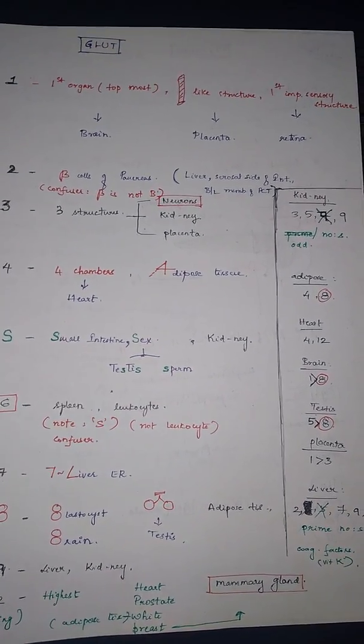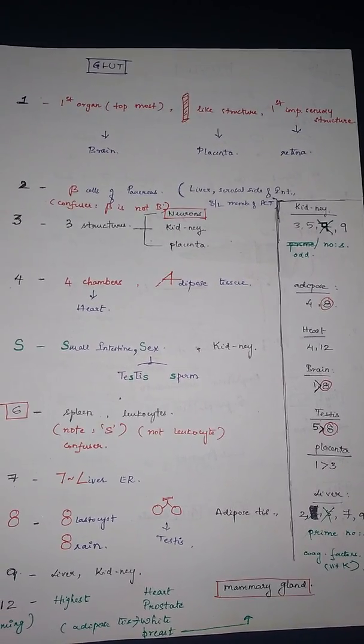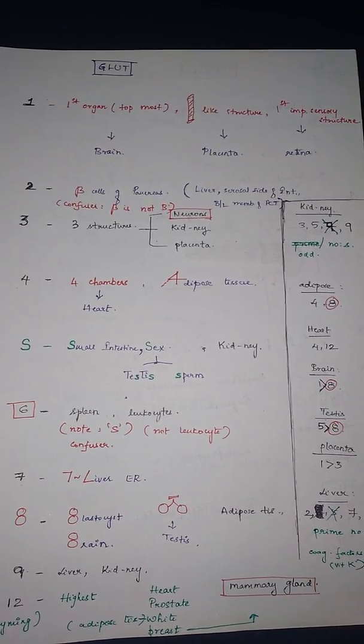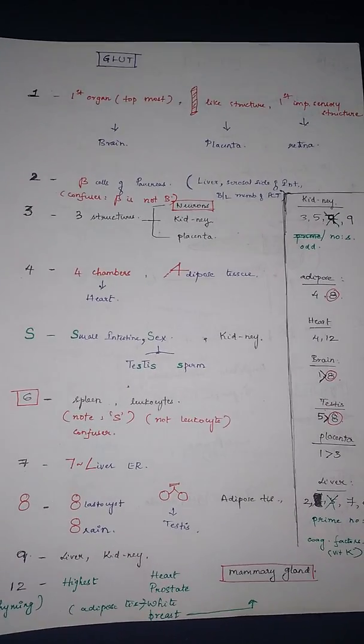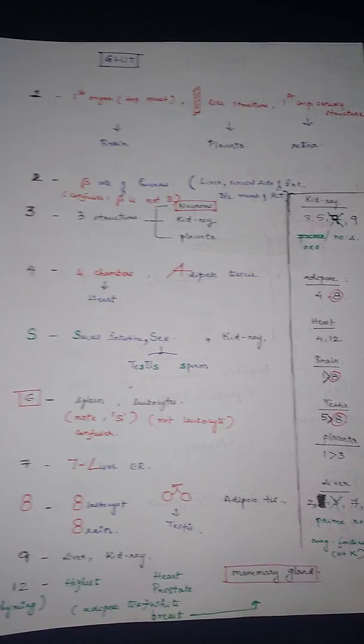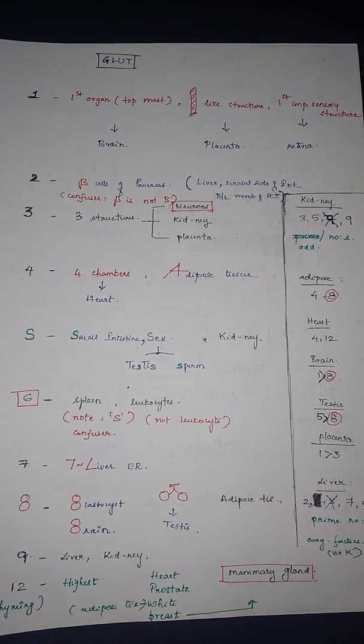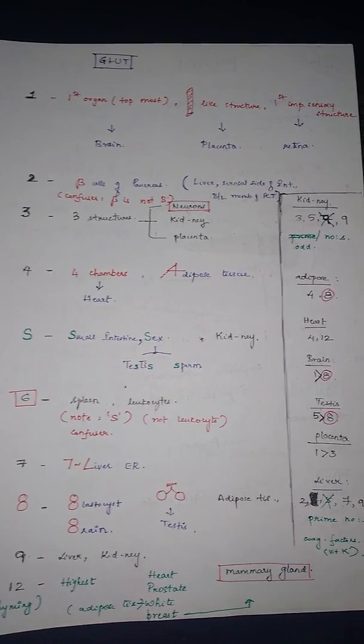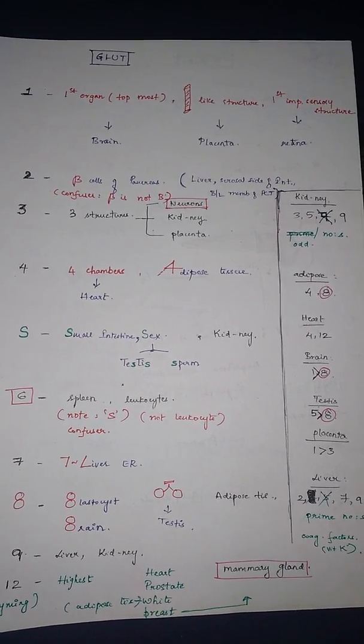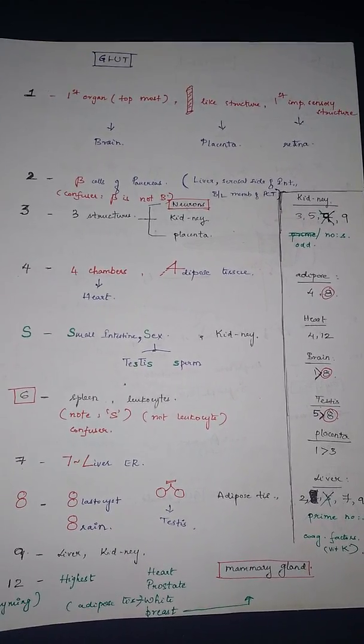Hi guys, welcome back to Medical Mnemonics Pocket. Today we have mnemonics to remember GLUT receptors. So as you can see, here is the chart of GLUTs. Starting with one, we have brain, placenta, and retina. They can be remembered simply as the first organ, that is the topmost organ, one leg structure, and the first important sensitive structure.